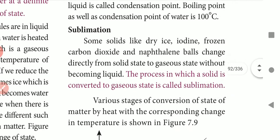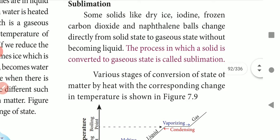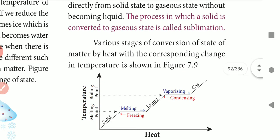Next is sublimation. Some solids like dry ice, iodine, frozen carbon dioxide, and naphthalene balls change directly from solid state to gaseous state without becoming liquid. The process in which a solid is converted to a gaseous state is called sublimation.